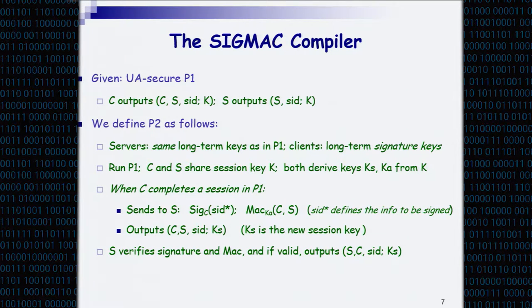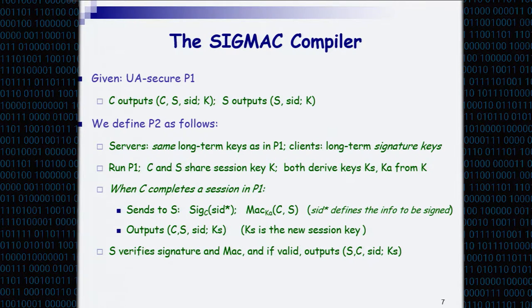Given a UA-secure protocol P1 in which the client knows the identity of the server (because the server authenticated) while S outputs the key without an identity from the client, what we do is: now the client also has a long-term public or shared key. When the UA protocol ends, the client C sends two elements to the server: a signature on what I call SID*, which is a part of the transcript, and a MAC with a key derived from the session key of protocol P1.